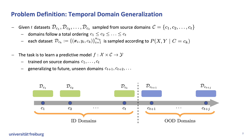Let's briefly discuss the problem definition of temporal domain generalization. In this setting, we are given T datasets sampled at certain points in time in increasing order. Each dataset consists of a set of instances sampled from a differing distribution. The task is then to learn a predictive model on these source domains that generalizes to future, unseen domains.